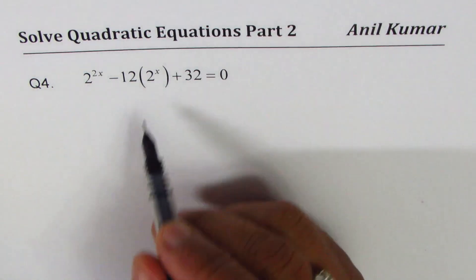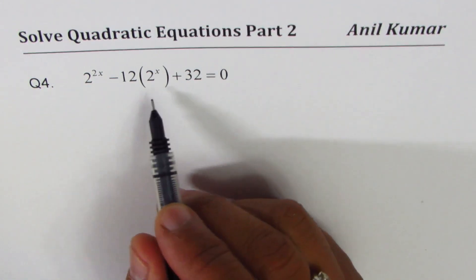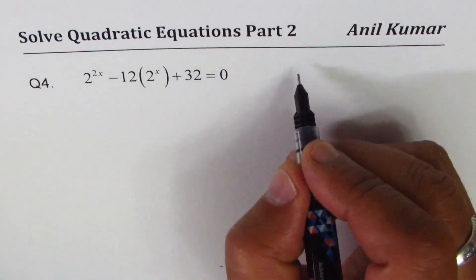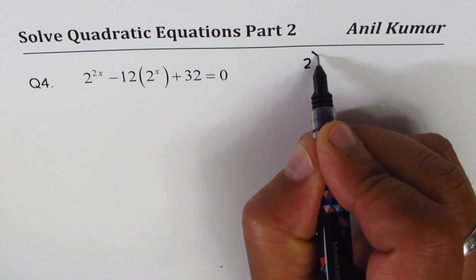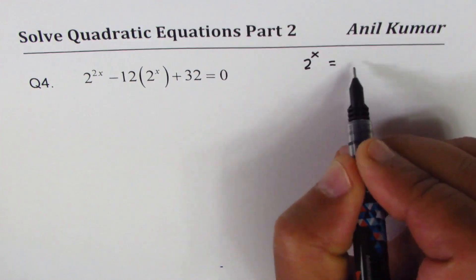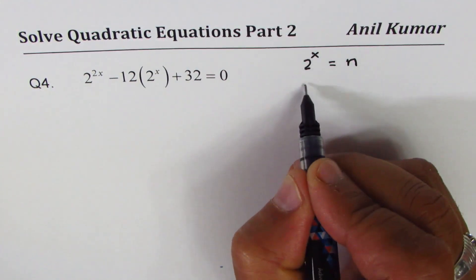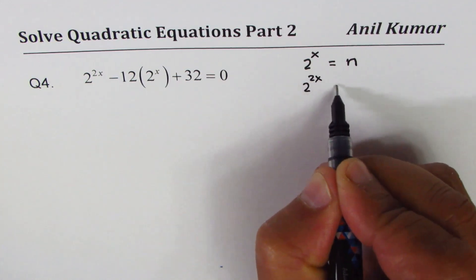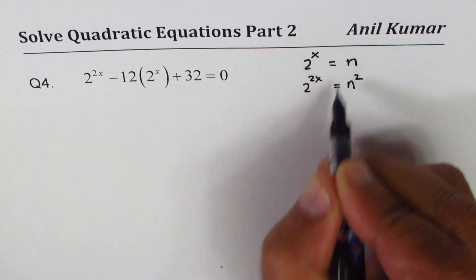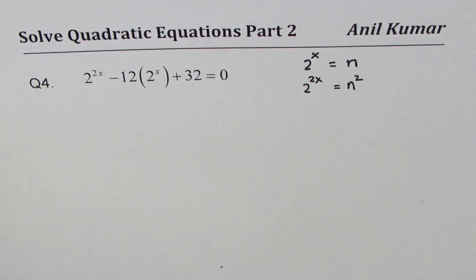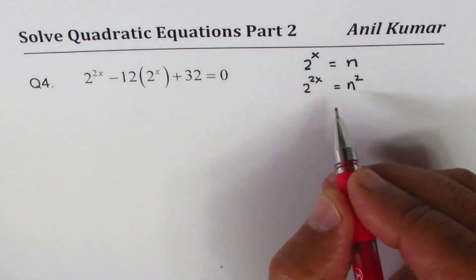Solve really means find the value of x. Now if I make a small substitution, that is to say we'll write 2 to the power of x as equal to some number n. In that case, square of this will be 2 to the power of 2x, which is n squared. So that is the kind of substitution we will do.